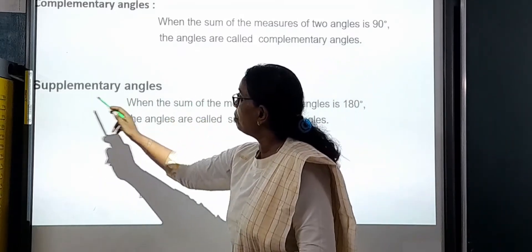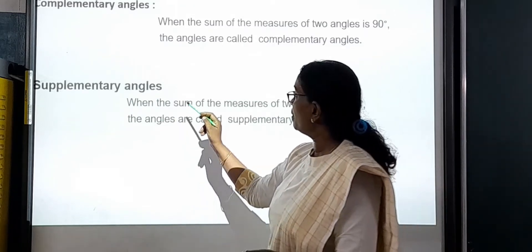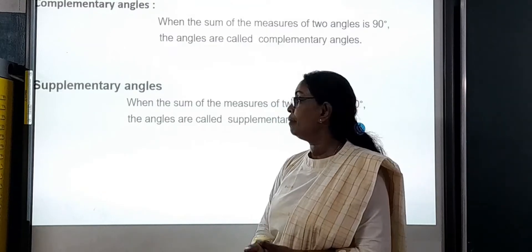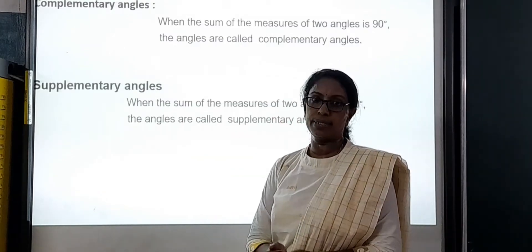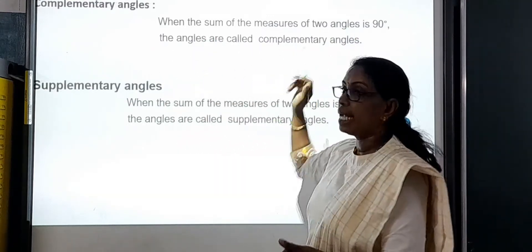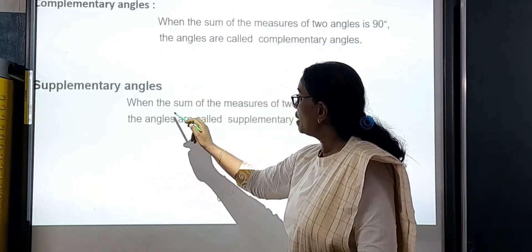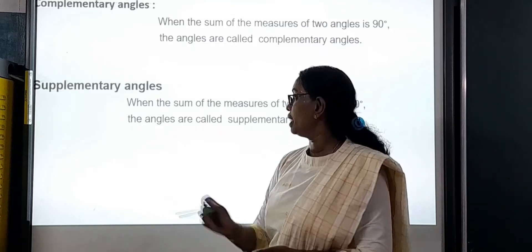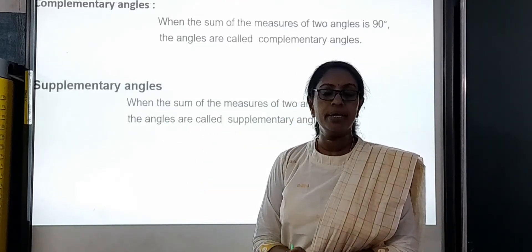And next one is the supplementary angles. When the sum of the measures of two angles is 180 degrees, the angles are called supplementary angles.